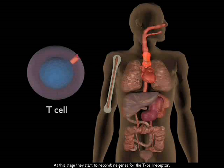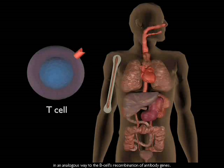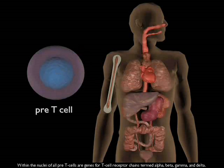T-cells replicate in the subcapsular region of the thymus. At this stage, they start to recombine genes for the T-cell receptor in an analogous way to the B-cell's recombination of antibody genes.